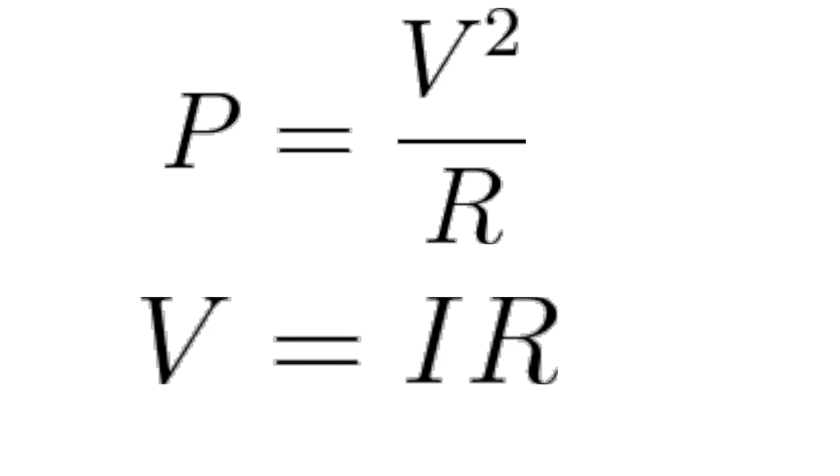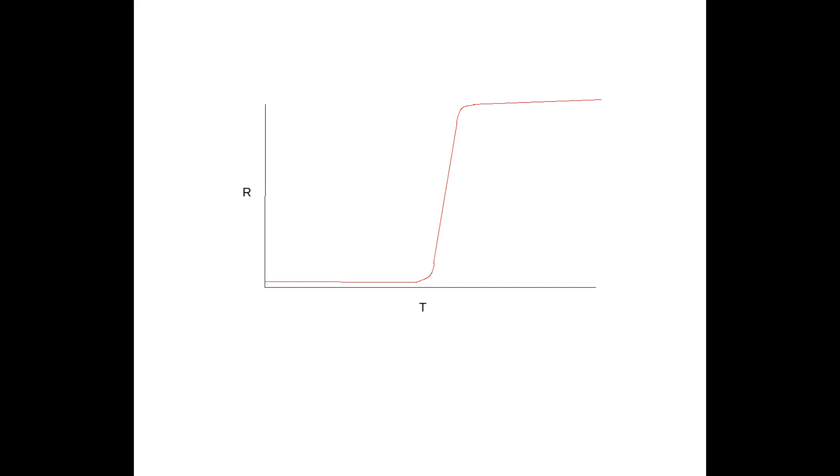And look at what happens from the Joule formula. Any increase in resistance causes a decrease in Joule power. Any decrease in resistance increases Joule power. Now an increase in Joule power of course heats the device up, and a decrease in Joule power cools it down.